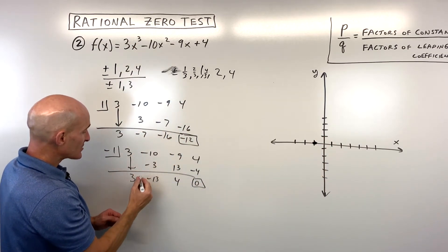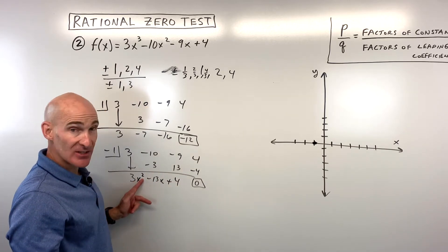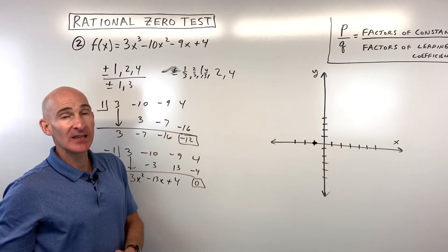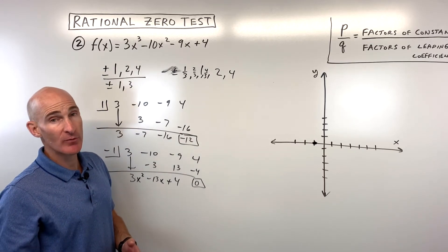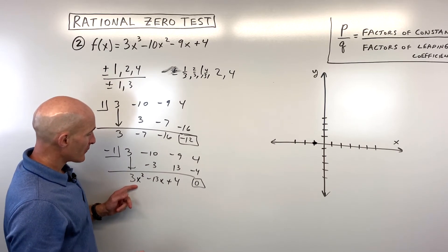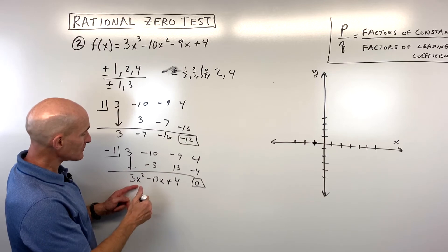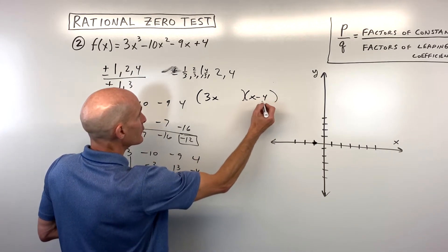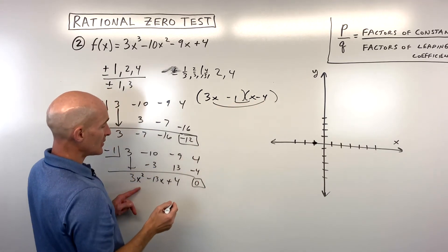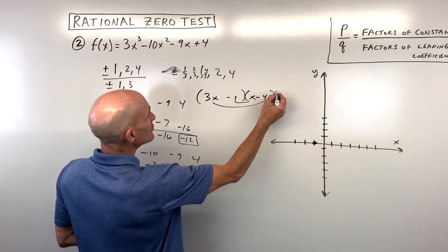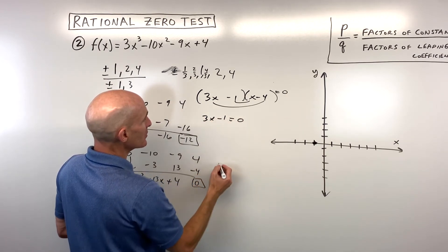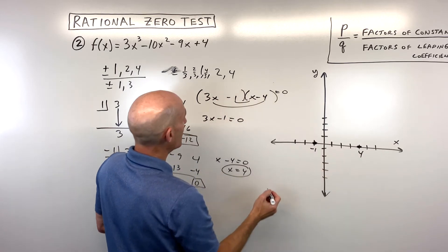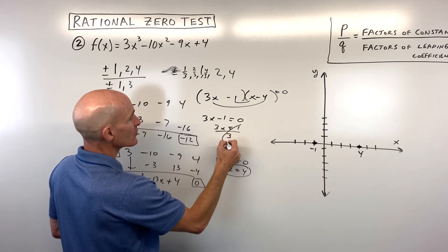Doing that synthetic division drops it down from x cubed to x squared. You want to bring it down to a quadratic so you can then factor it or use the quadratic formula. It looks like we can factor this as 3x and 1x, with negative 4 and negative 1 — giving inside term negative 1x and outside negative 12x, which adds up to our middle term negative 13x. Setting these equal to 0: 3x minus 1 equals 0, and x minus 4 equals 0. Adding 4 to both sides gives x equals 4. Solving the other equation by adding 1 and dividing by 3 gives x equals 1 third.